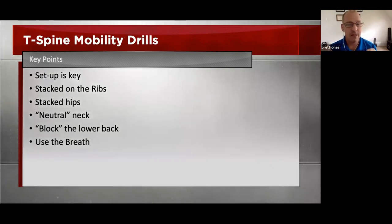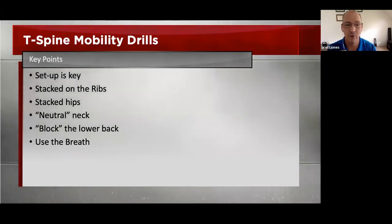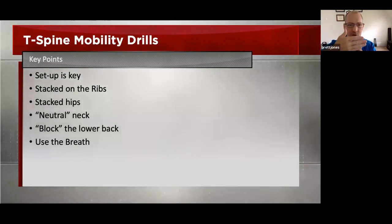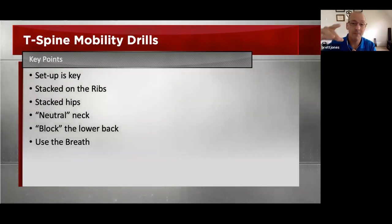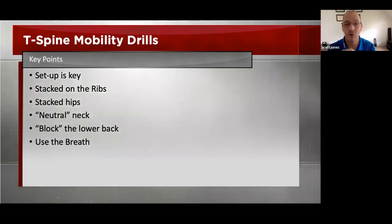The setup is key. I'll spend five minutes getting somebody in the right setup position so that I can get 10 good diaphragmatic breaths and rotations out of them in the two drills we're about to talk about. Make sure you're stacked on the ribs like you're laying up against a wall, stacked at the hips. Bring a foam roller in to rest the knee on to keep those hips stacked. Use enough bolster to keep the neck neutral, block the lower back with a foam roller, chair, or doorway, and focus on using the breath.